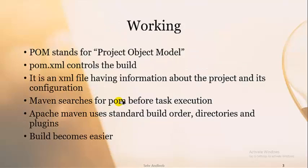You must remember these things. How does Maven work? POM stands for Project Object Model and it is an XML file that controls the build. It is the structural unit — an XML file having information about the project and its configuration. Maven searches for the POM file before task execution. Without it, you cannot run a Maven-based project. Apache Maven uses standard build order, directories, and plugins. You can get jar files and war files from its central repository — they are directly downloaded and installed.